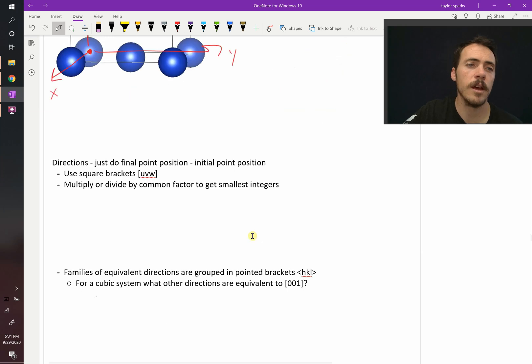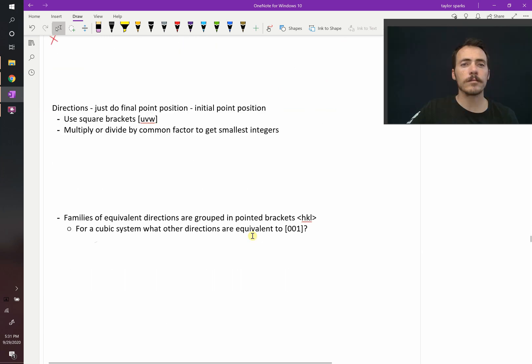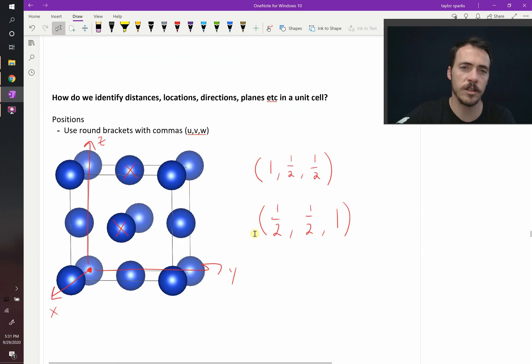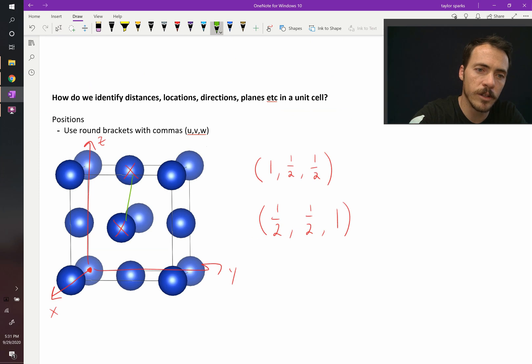What about directions? Well, one way to do directions would be to simply take the final position and subtract from it the initial position. So let's say in this example we just did, we wanted to do that direction. From that point to that point, right? That direction.